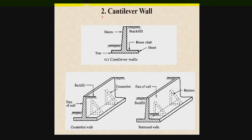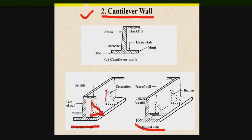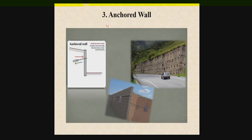Another case of the retaining wall might be the cantilever wall. Cantilever walls are thin walls which are reinforced with reinforcement. There are two types of cantilever walls. In the cantilever wall we have these triangular supports on the back of the retaining wall, and in the buttressed retaining wall we have these triangular supports on the face of the retaining wall.